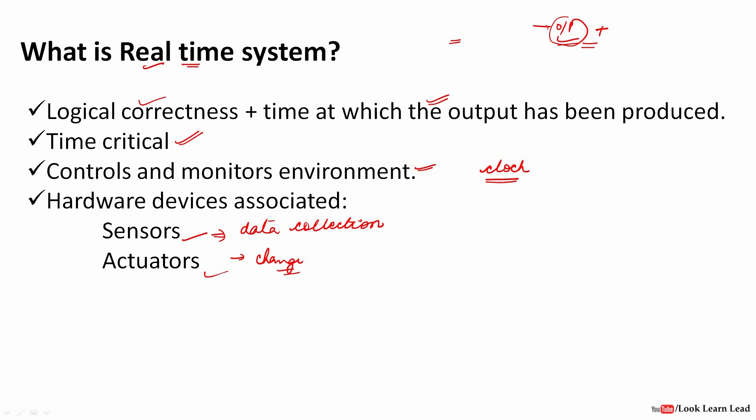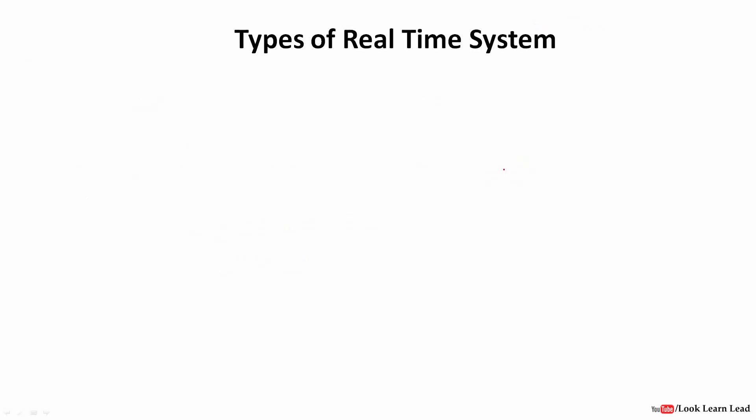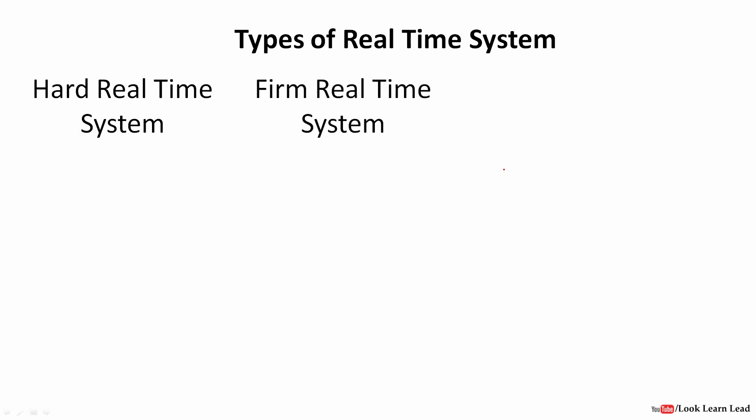There are three types of real-time systems: the first is a hard real-time system, the second is a firm real-time system, and the third is a soft real-time system.